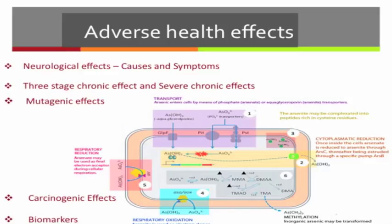Arsenic has mutagenic effects. Both arsenic-3 and arsenic-5 inhibit DNA, RNA, and protein synthesis by replacing phosphate in nucleotides during DNA synthesis. They also affect DNA repair systems. Arsenic-3 can cause damage to DNA due to oxidative mechanisms. They display clastogenic properties by the ability to induce micronuclei, alter sister chromatid exchange, and incorporate into the DNA backbone.